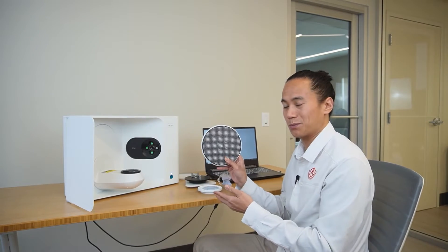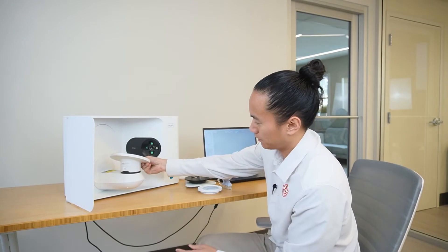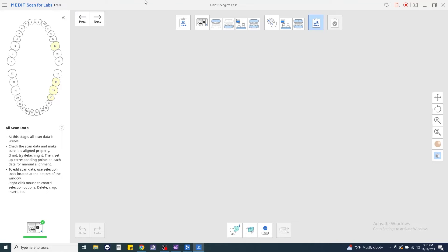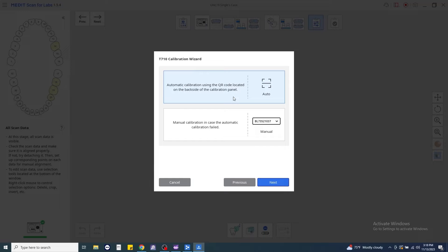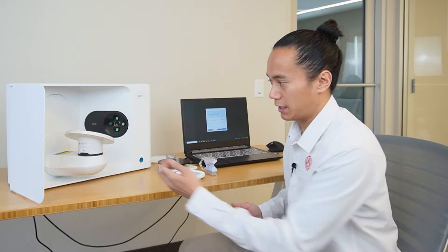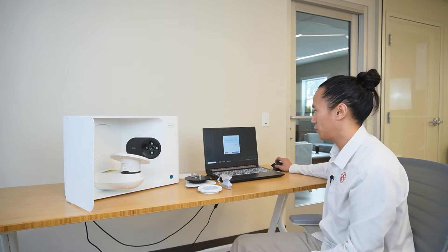The first thing we're going to do is we're going to take our calibration plate. We're just going to set it along the scan stage. Bottom left-hand corner of the MediT Scan app, we're going to click the calibration wizard icon. Click Next. There's going to be two options.